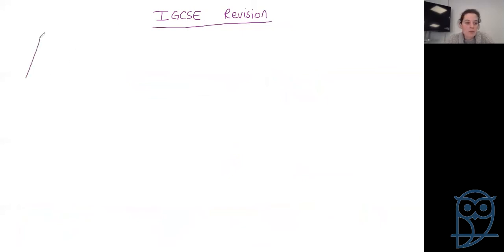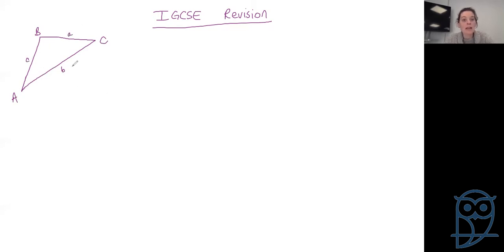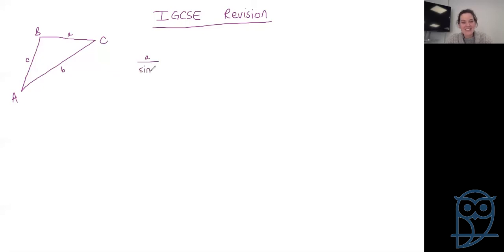We need to think back to non-right-angle triangles. You always label your points as capital letters, with little letters opposite: little a is opposite big A, little b opposite big B, little c opposite big C. Little letters for sides, big letters for points and the angle at that point. Hopefully you're remembering this takes us in the direction of the sine rule. A over sine A is the same as b over sine B is the same as c over sine C. The ratio of these sides — even without a right-angle triangle — lets us calculate unknown sides or, flipped over, calculate unknown angles.